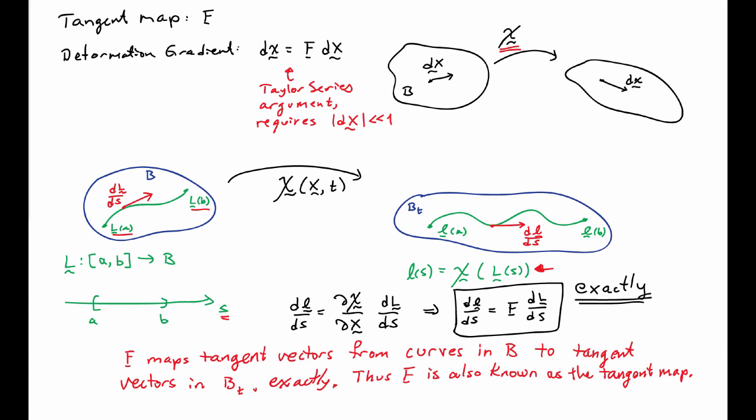We have this statement of this exact map. For that reason, F is also known as the tangent map. It has two names: tangent map and deformation gradient.